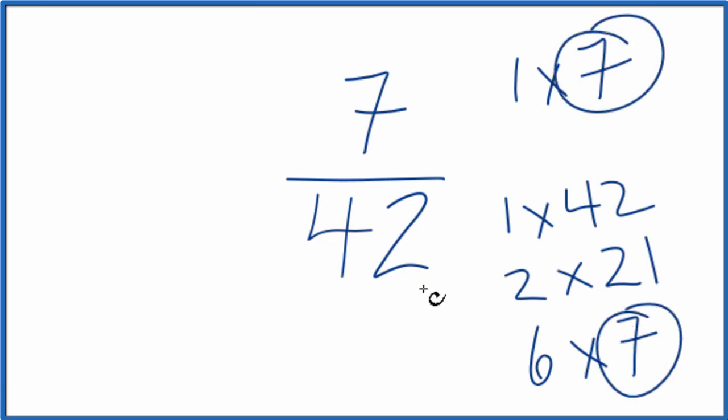So we'll divide the numerator by 7 and the denominator, and we'll have simplified 7 over 42. Let's move these over here.